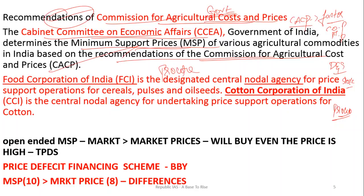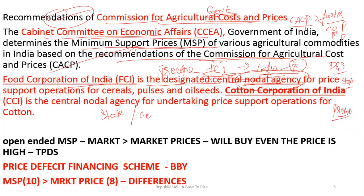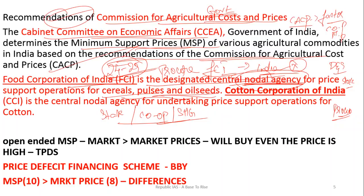Who procures the crops from the farmers? It is the Food Corporation of India (FCI), which is the nodal agency for procurement operations across India. FCI procures cereals, pulses, and oil seeds. However, raw cotton is procured by the Cotton Corporation of India.